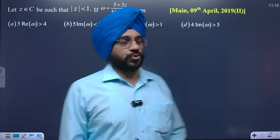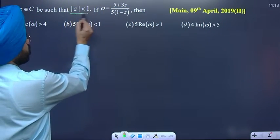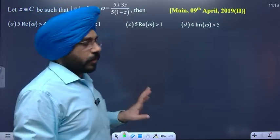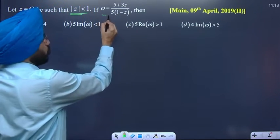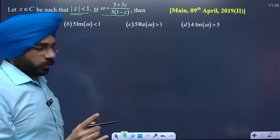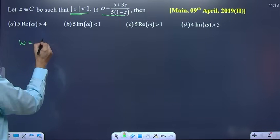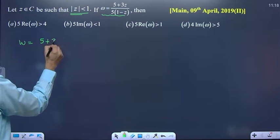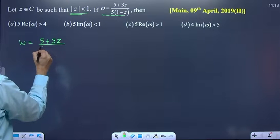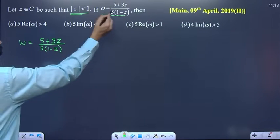Hello students. This question gives mod of z less than 1 and the value of w is given. From w, we need to find z. So w is equal to 5 plus 3z divided by 5, then 1 minus z. This expression gives us the value of z to find out.